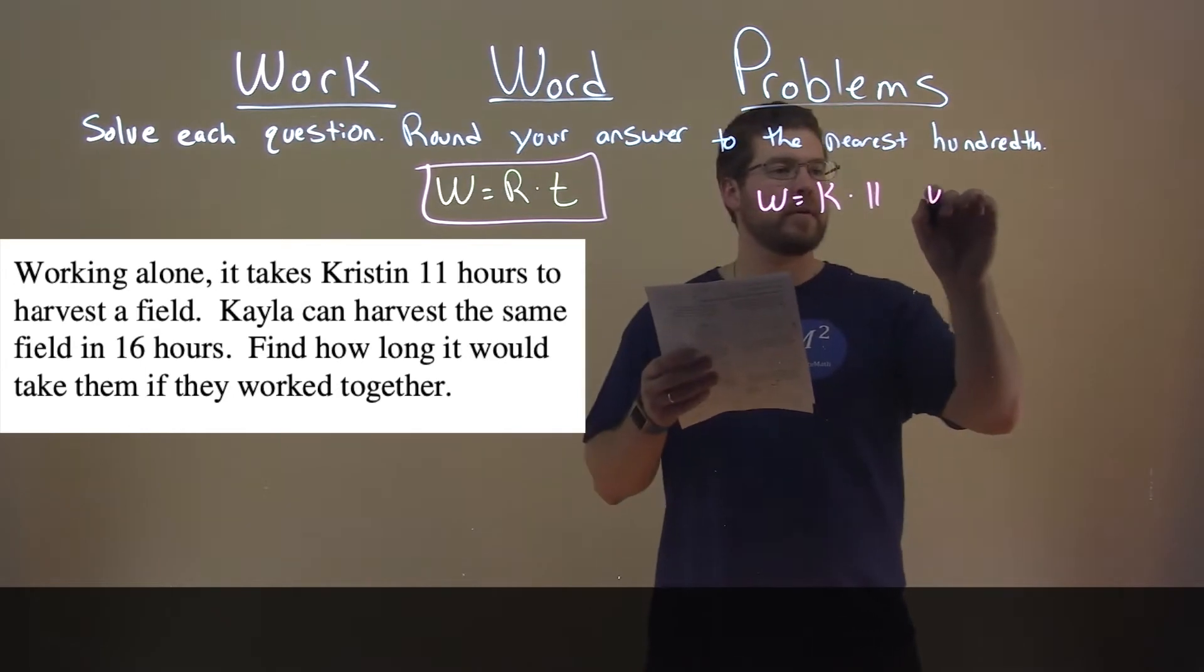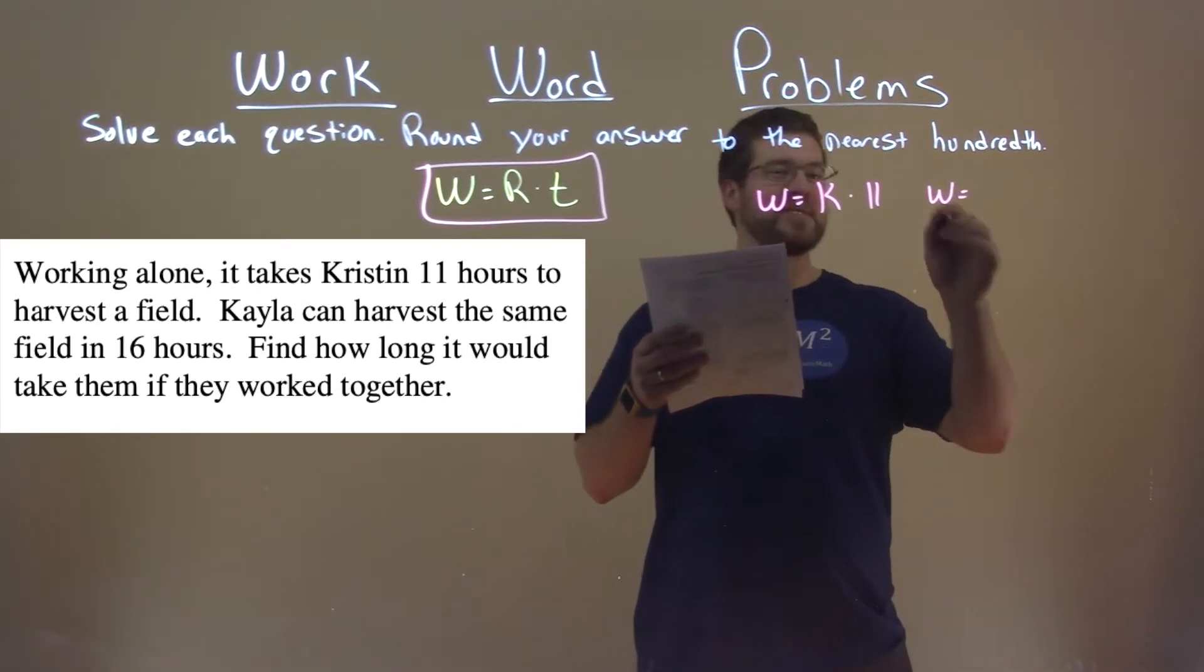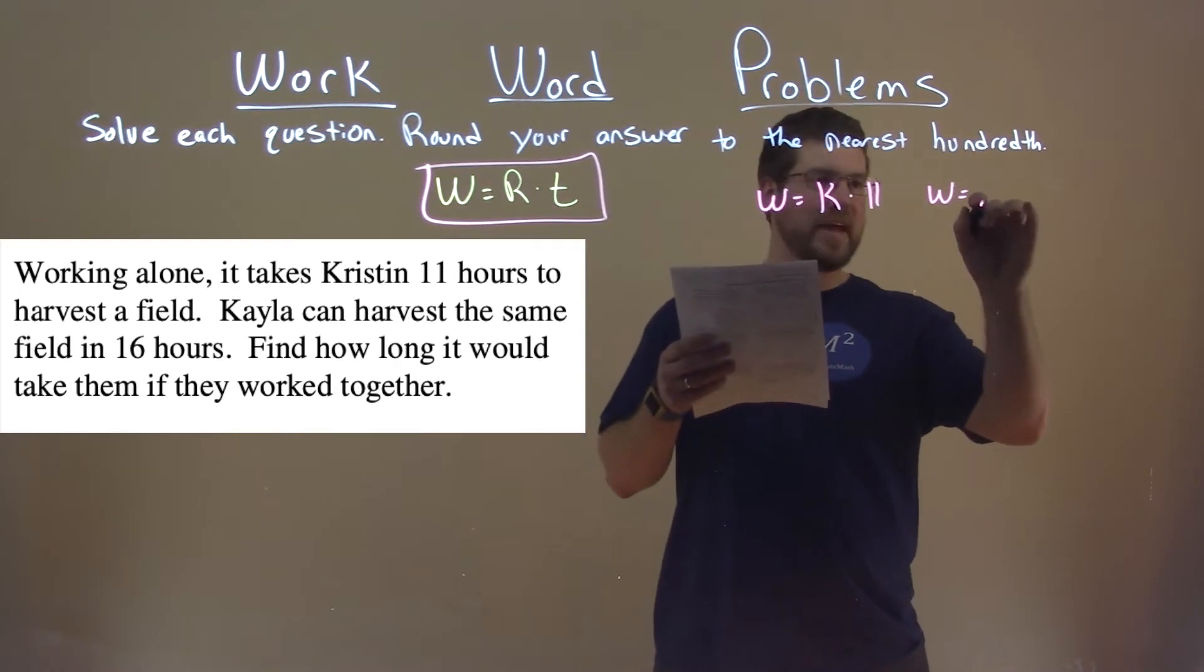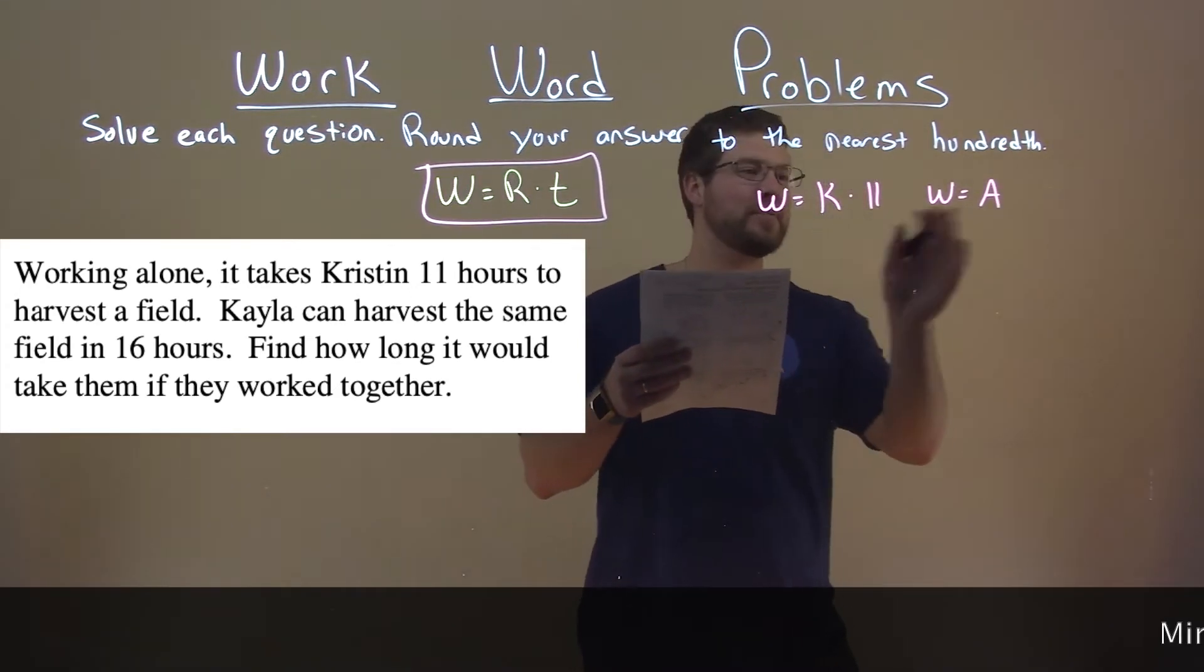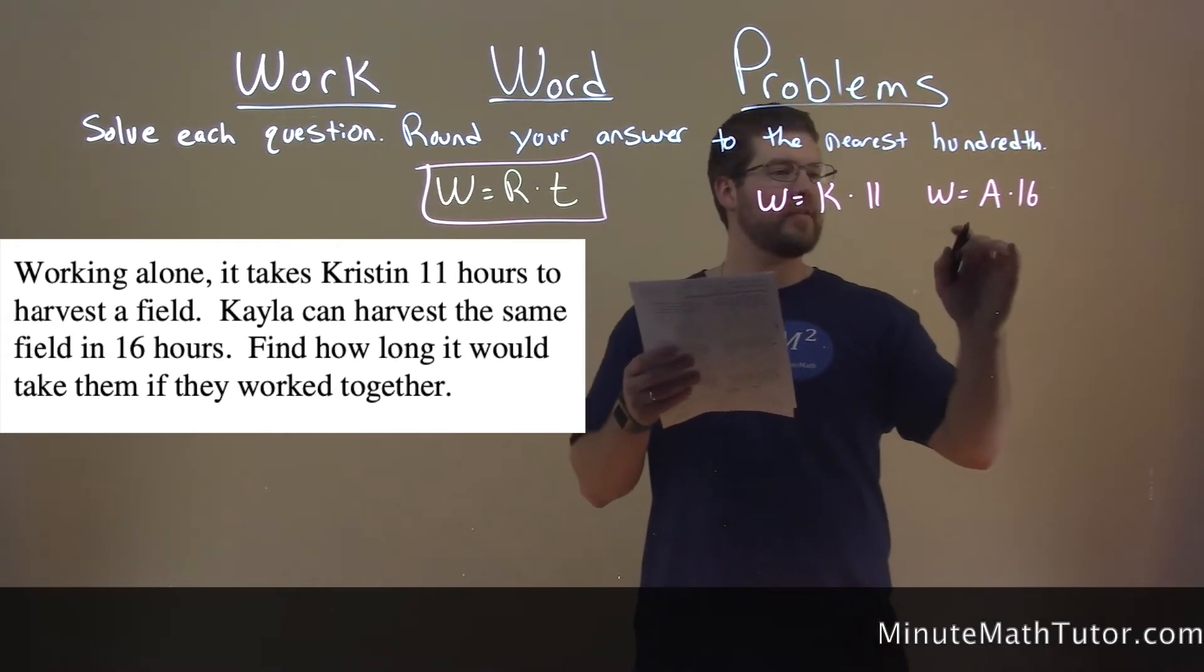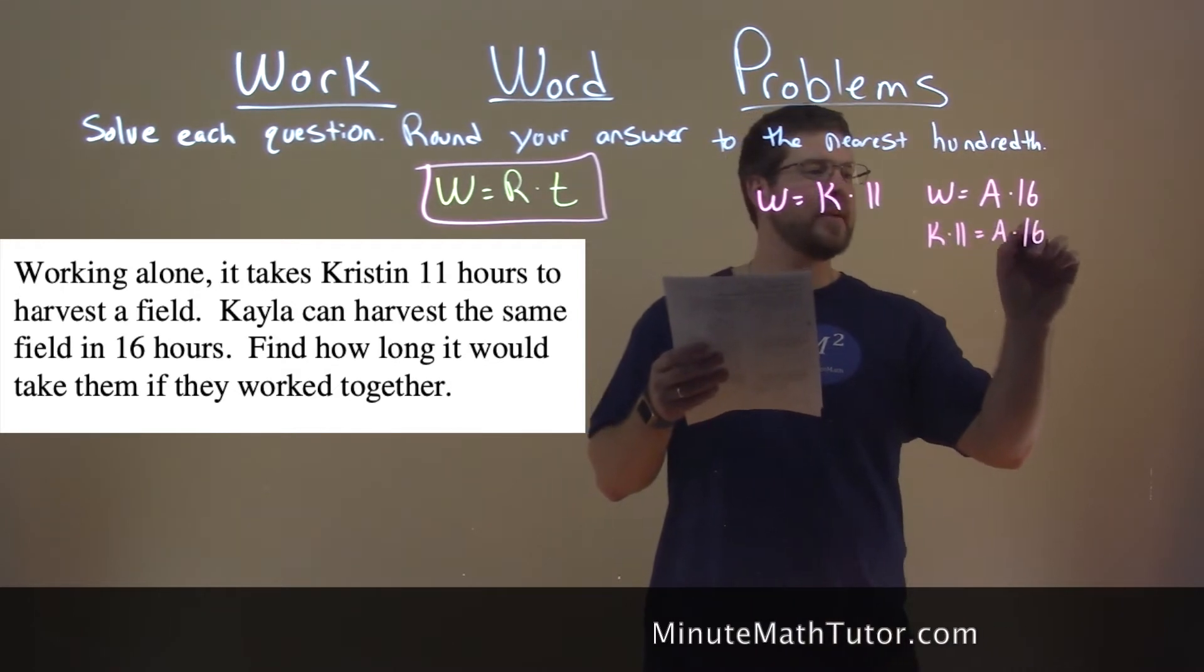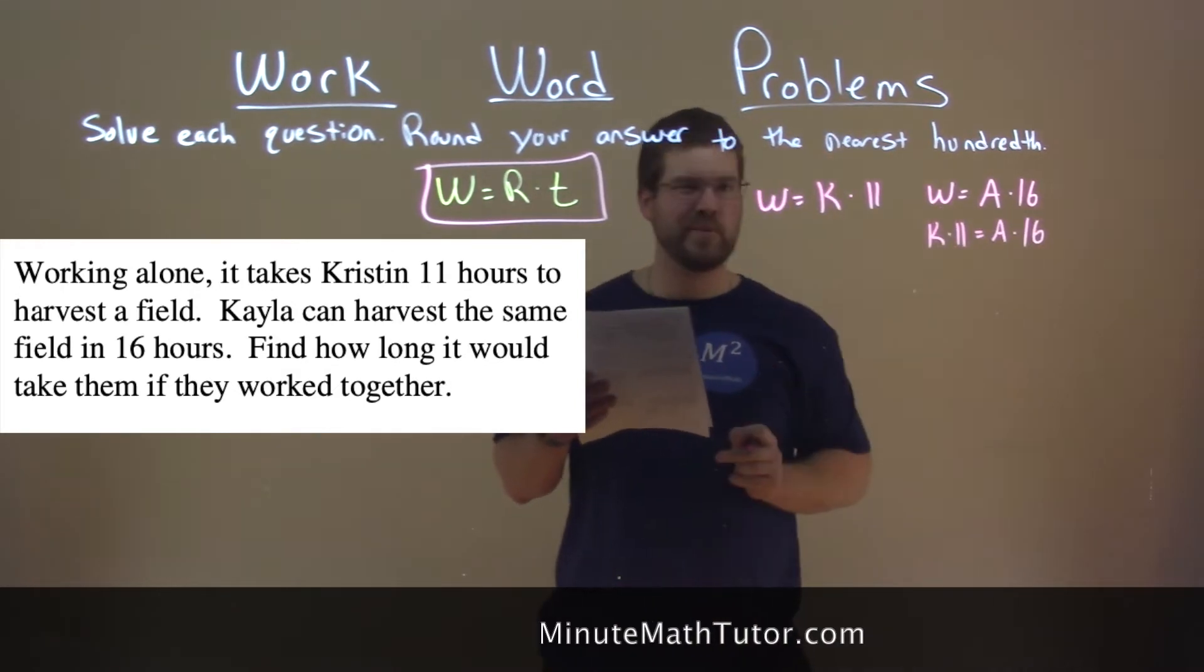We know that same work is equal to Kayla's work rate, so we'll call that A for Kayla's work rate. We can only put two K's there and it takes 16 hours there. If we combine these two, we have K times 11 equals A times 16. We can do that because they're both equal to W.